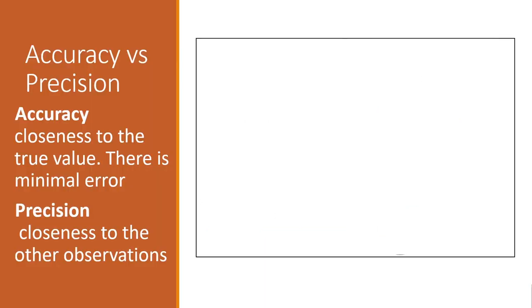What is accuracy and precision? Accuracy is the closeness to the true value. There is minimal error if it is accurate - that's what it means to be accurate.